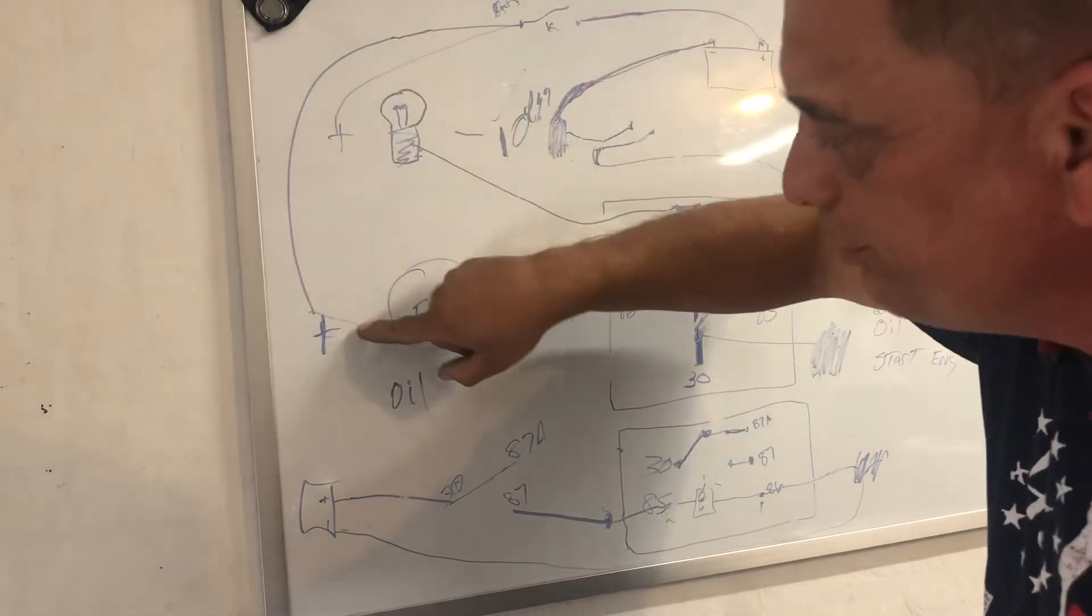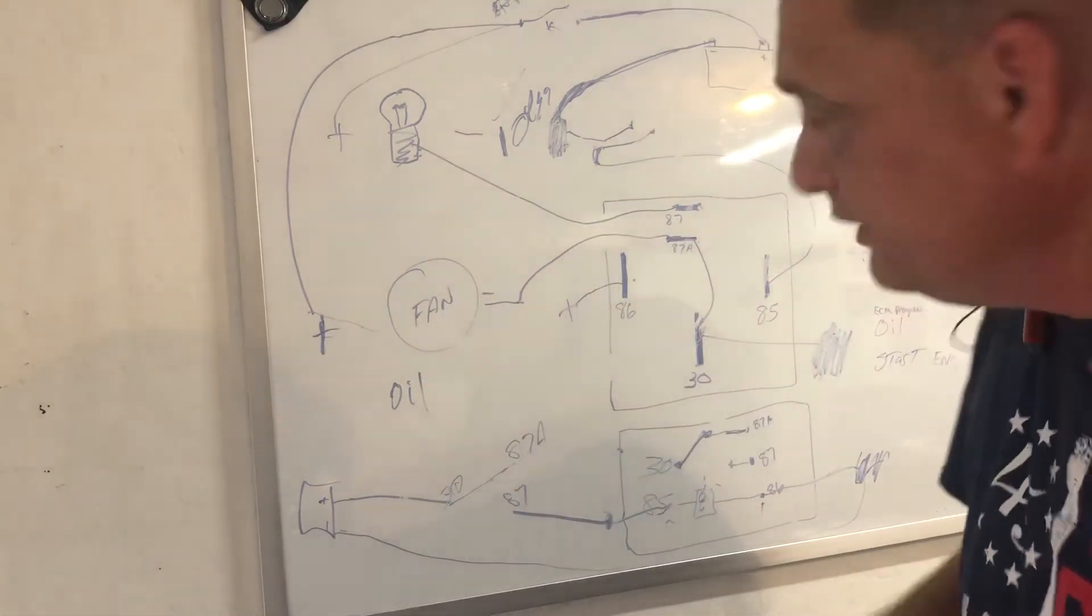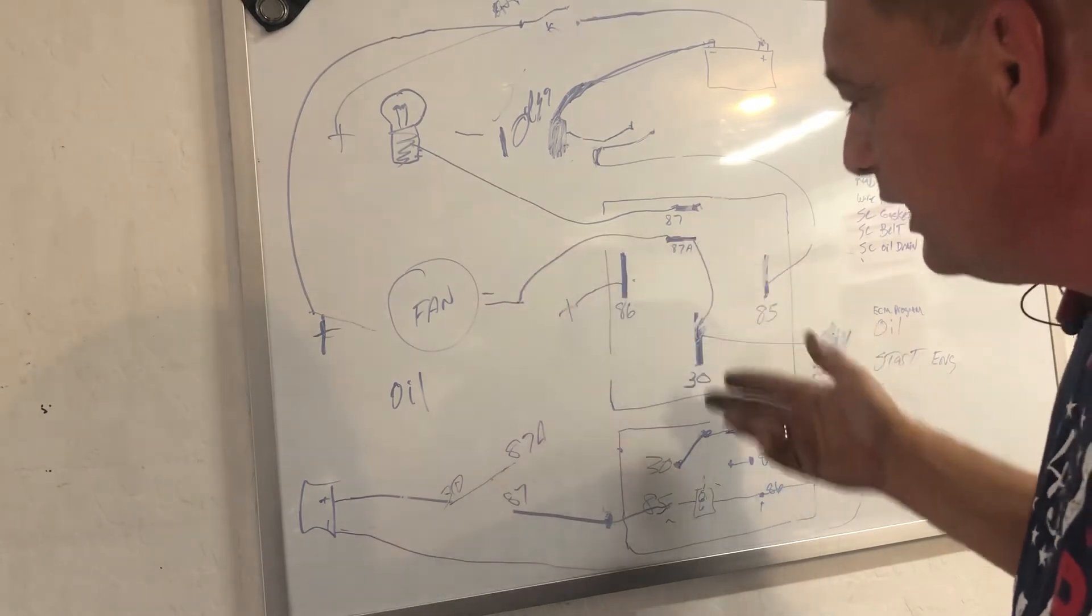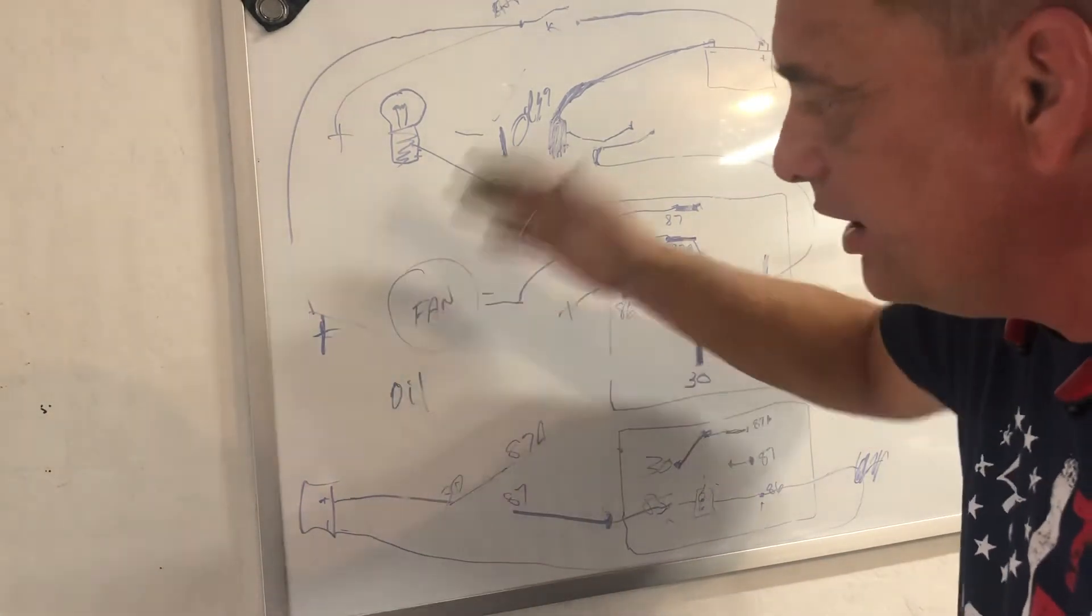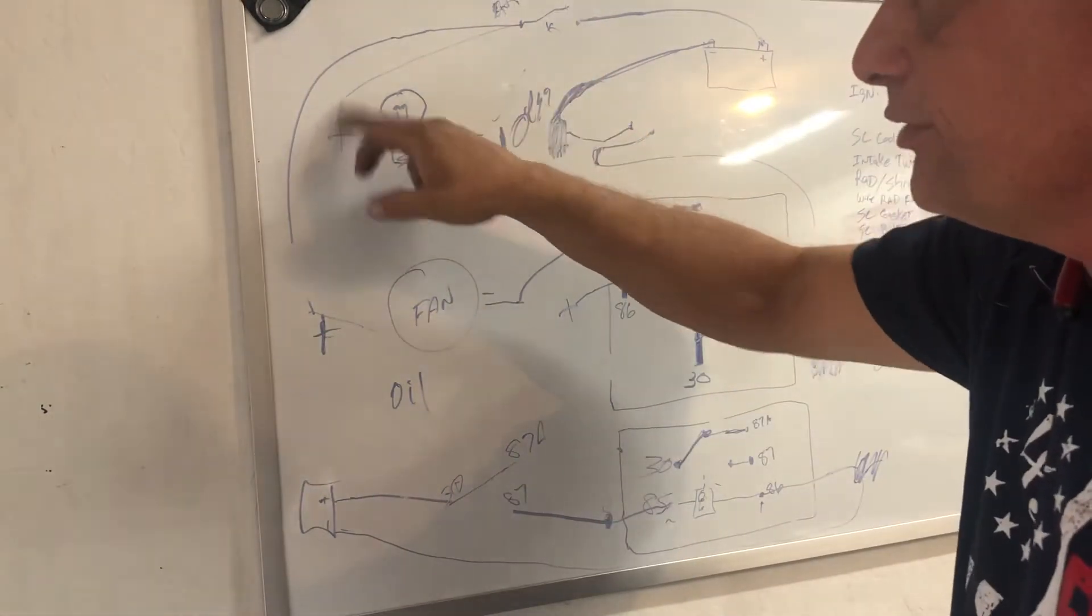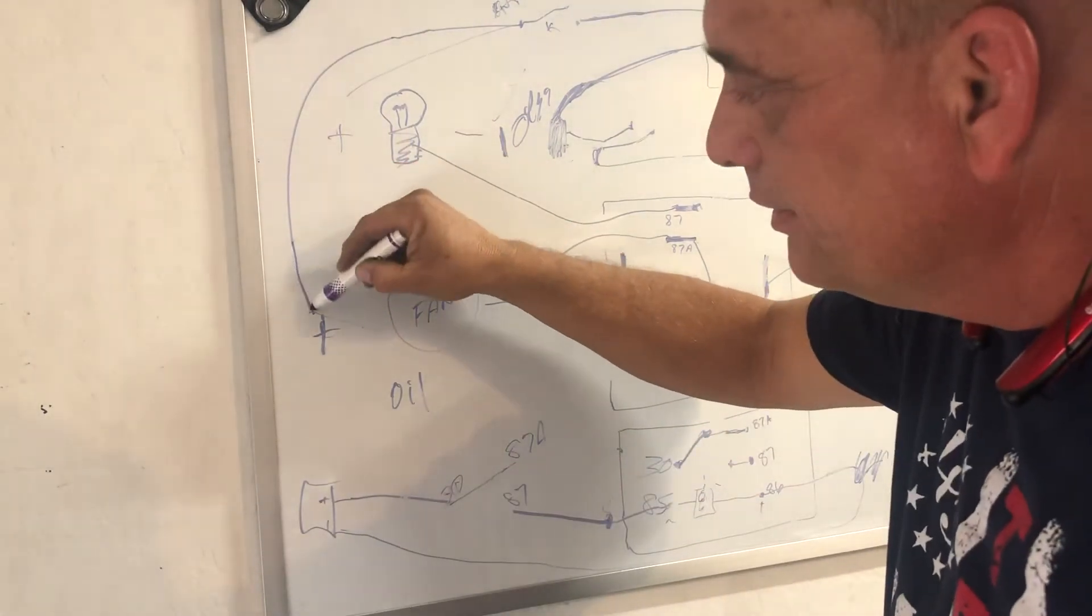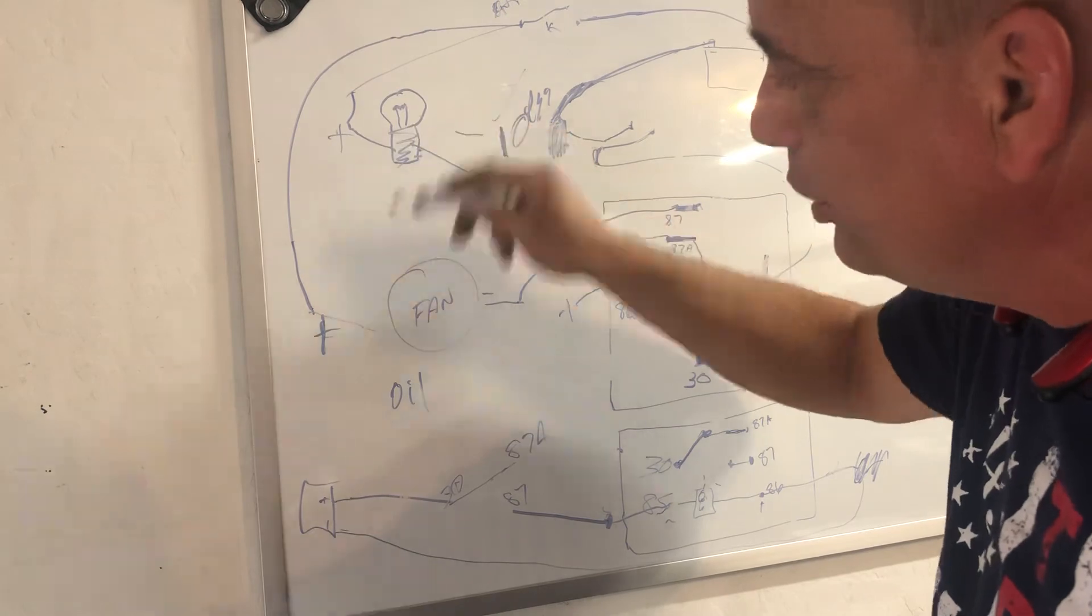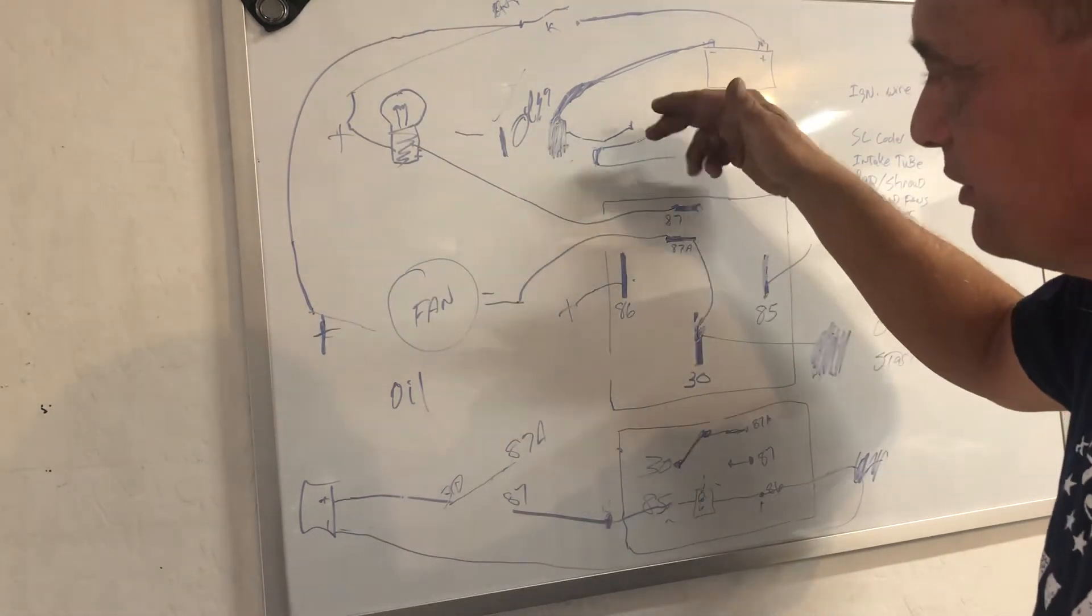Then when I turn off the key, I now lose positive to the fan. So the fan will shut off even though the solenoid stays engaged because it's in relaxed mode. The fan no longer has positive, so it's off. The light is off because it no longer has positive.